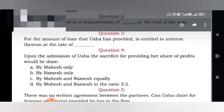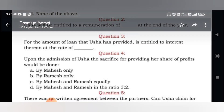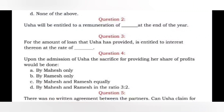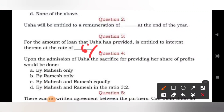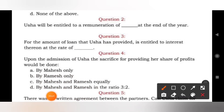Question number 3: for the loan amount that Usha has provided, she is entitled to interest at what rate? Since there is no partnership deed, as per the Partnership Act, interest will be provided at 6%. So Usha is entitled to interest at the rate of 6%.